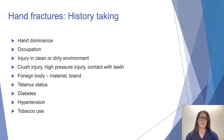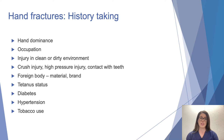When someone comes in with a hand injury, begin with history taking. Consider the person's hand dominance, occupation, and how the injury will affect their lifestyle and return to work. It's important to know if the injury happened in a clean or dirty environment, as that influences the need for washout, antibiotic choices, and management. Crush injuries, high-pressure injuries, and contact with teeth all have specific management guidelines. Consider any foreign body, its material, brand, and origin. Tetanus status should be confirmed, and comorbidities affecting healing—such as diabetes, hypertension, and smoking—should be noted.